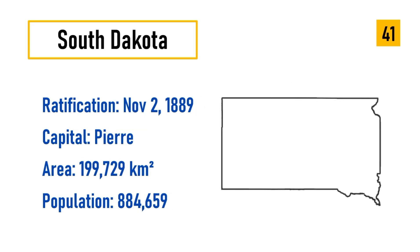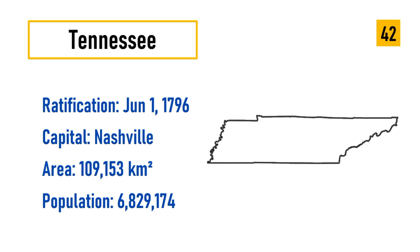Number 41: South Dakota, ratification November 2, 1889, capital Pierre, area 199,729 square kilometers, population 884,659. Number 42: Tennessee, ratification June 1, 1796, capital Nashville, area 109,153 square kilometers, population 6,829,174.